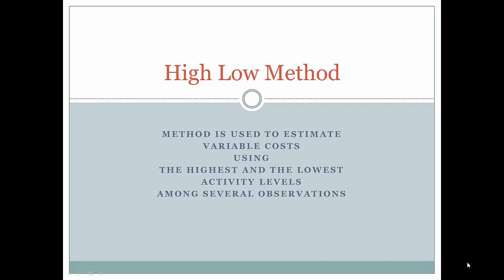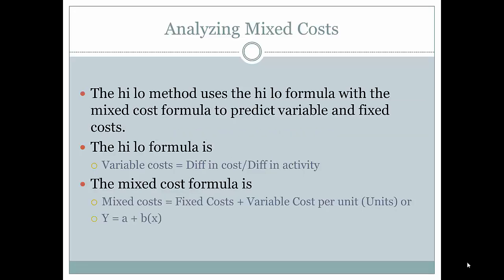The high-low method. This method is used to estimate variable costs using the highest and lowest activity levels among several observations. The reason why we're using the high-low method is in order to analyze and predict mixed costs.